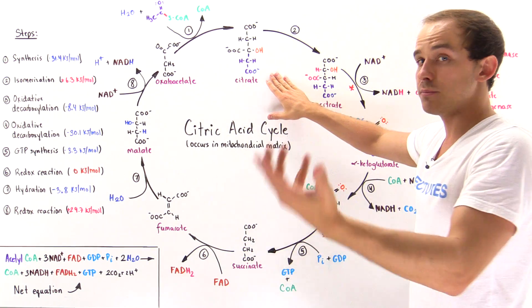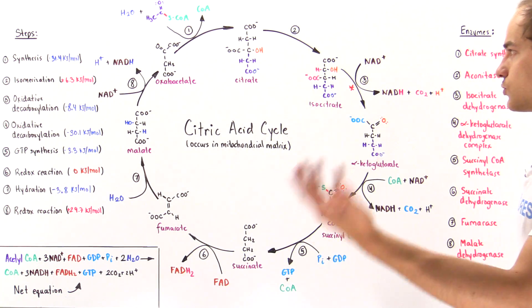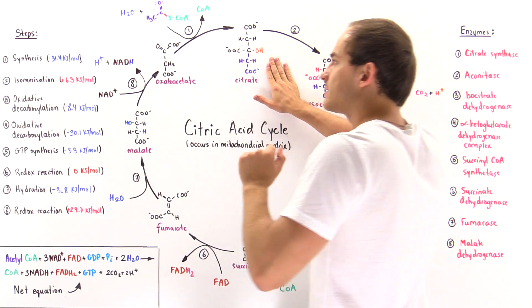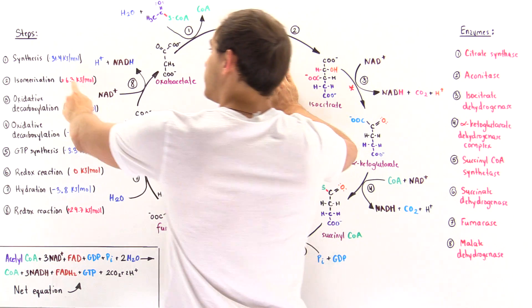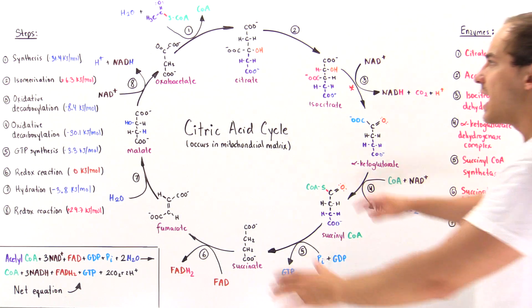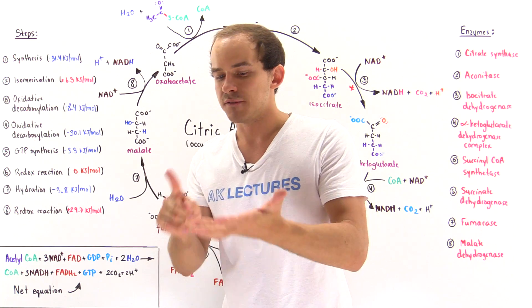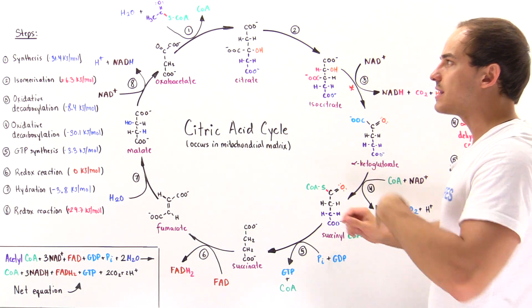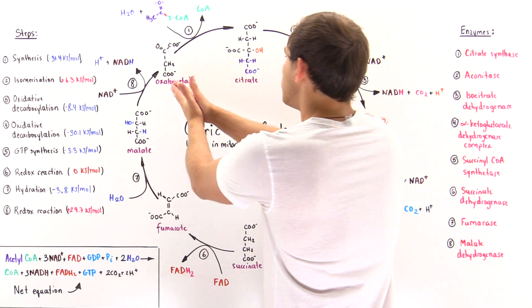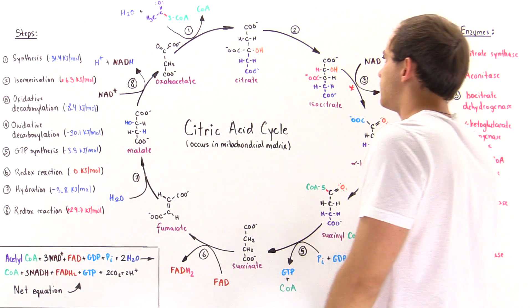Citrate is also an example of a tricarboxylic acid, and that's why this is sometimes known as the TCA cycle, or tricarboxylic acid cycle. This step is an exergonic step, and under physiological cell conditions it releases about negative 31.4 kilojoules per mole of energy. This step actually consists of two different steps: the first step is an aldol condensation, and the second step is a hydration reaction. Ultimately, we form this citrate molecule from the oxaloacetate and this acetyl-coenzyme A.